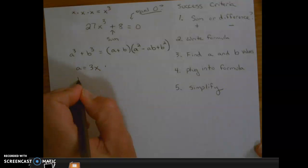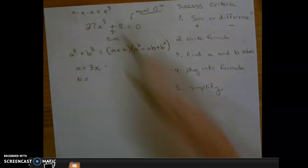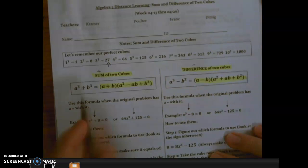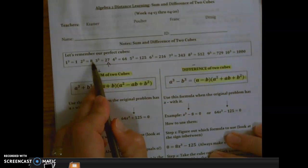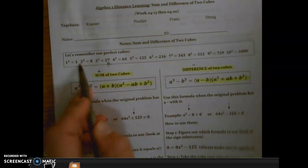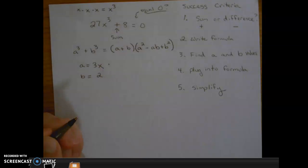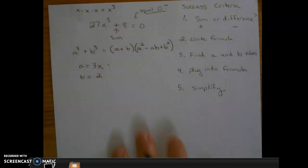Our b value, what's going to make 8? Let's look at our numbers again. 8. 2 makes 8. 2 × 2 × 2. So the b value is going to be 2.